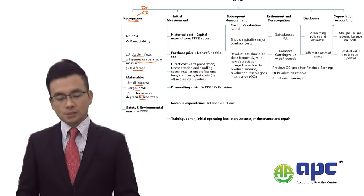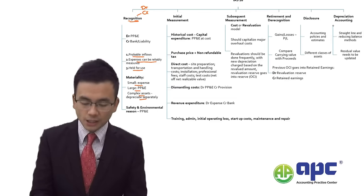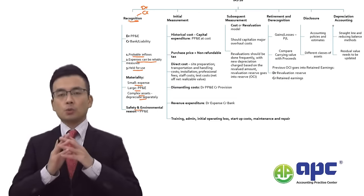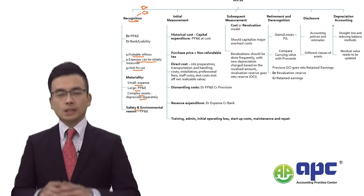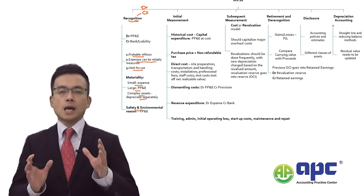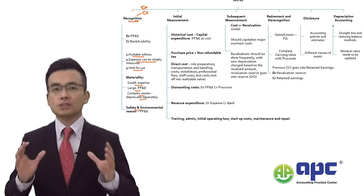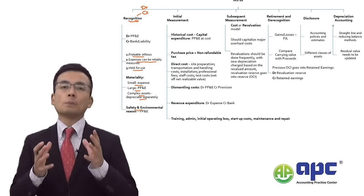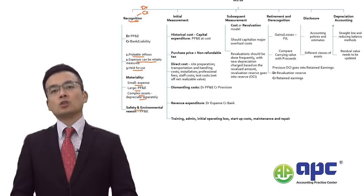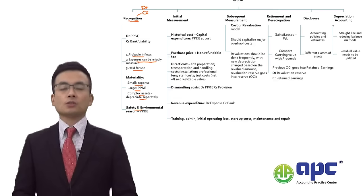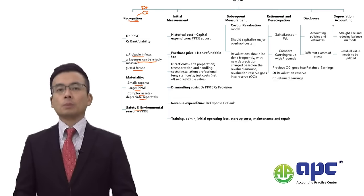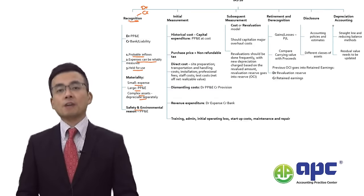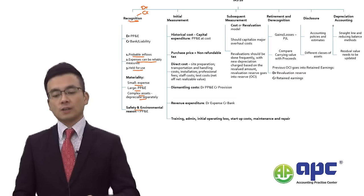Under IFRS No. 16, if there's anything related to safety and environmental reasons, we must capitalize those costs. For example, if we incur $1 million to build a factory and $0.1 million to plant trees for environmental compliance, that $0.1 million also needs to be capitalized as PP&E.